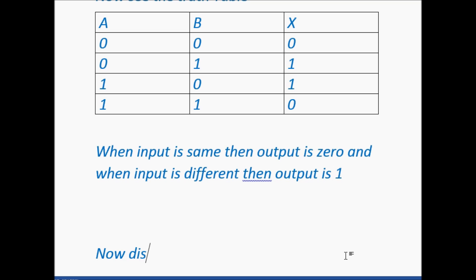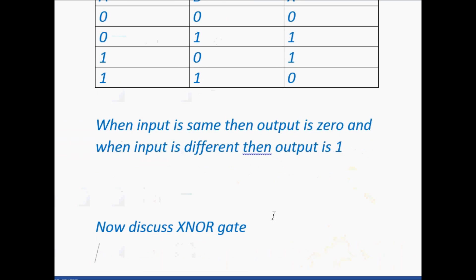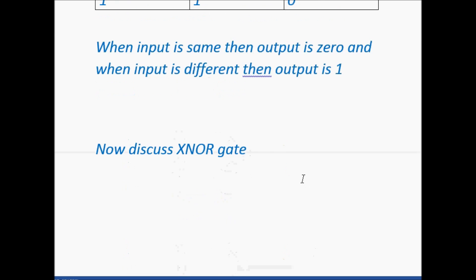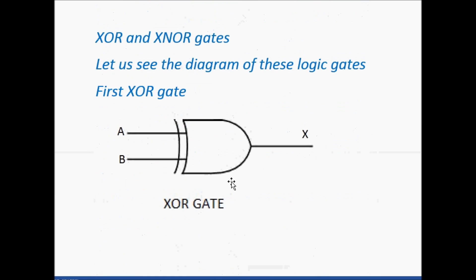Now discuss XNOR gate. See the diagram of XNOR gate. Here this is the diagram of the XNOR gate. Here A is one input and B is second input and X is output. In the XNOR gate, NOT is connected to form XNOR gate.